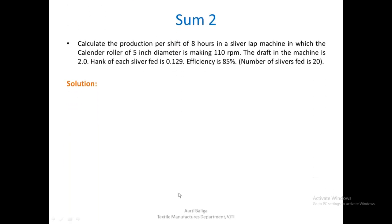We now come to the second problem. Calculate the production per shift of 8 hours in a sliver lap machine where the calendar roller of 5 inches diameter runs at 110 rpm. The draft in the machine is 2, the hank of each sliver fed is 0.129, efficiency is 85%, and the number of slivers fed is 20.